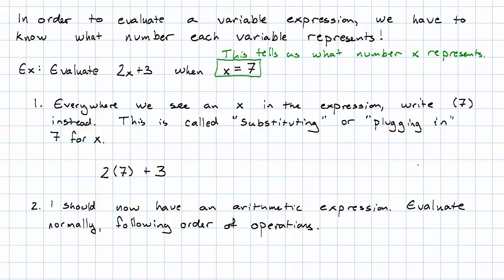So 2 times 7, writing these next to each other means 2 times 7, and then I add 3. Multiplication first, 14 plus 3 is 17.